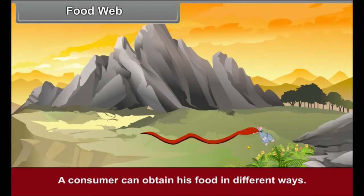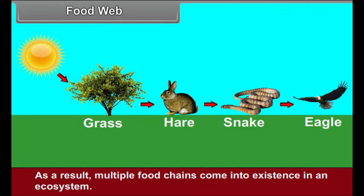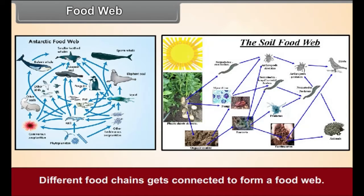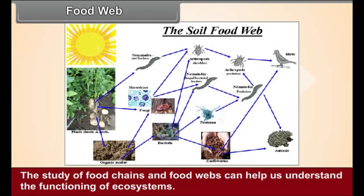Food Web: A consumer can obtain food in different ways. As a result, multiple food chains come into existence in an ecosystem. Different food chains get connected to form a food web. The study of food chains and food webs can help us understand the functioning of ecosystems.